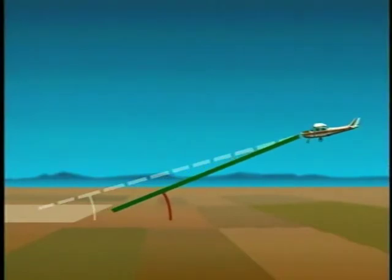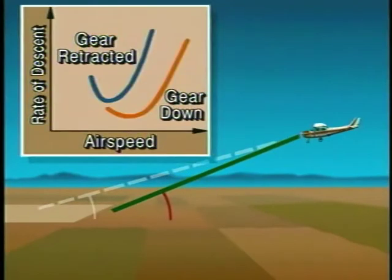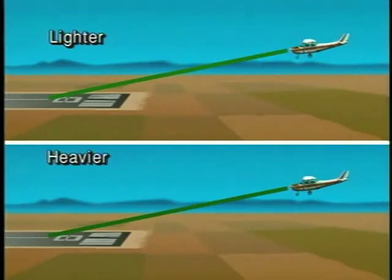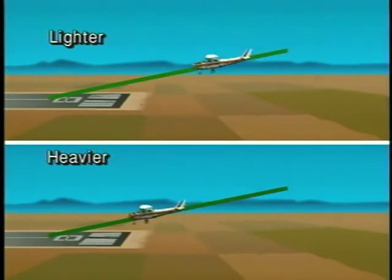As drag increases, so does glide angle. For example, in a glide when the landing gear is lowered, there is a corresponding increase in drag. To maintain the same airspeed, this increase in drag is counteracted by lowering the nose of the airplane, thus increasing the glide angle, which results in a reduced glide distance. Although the weight of the airplane doesn't affect glide ratio, it does affect the airspeed that must be flown to attain the best glide distance. Since a heavier airplane will sink faster, a higher airspeed must be maintained to support the greater weight and yield the same glide distance as a lighter airplane.